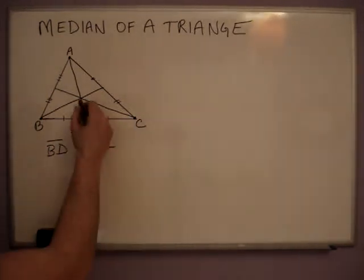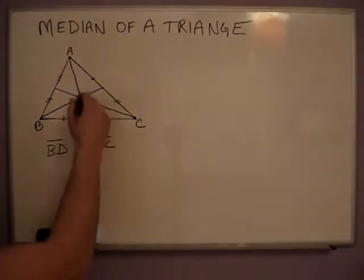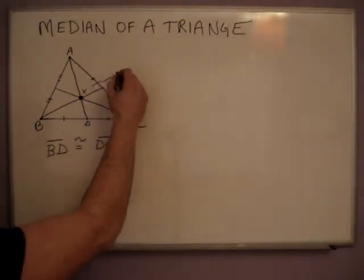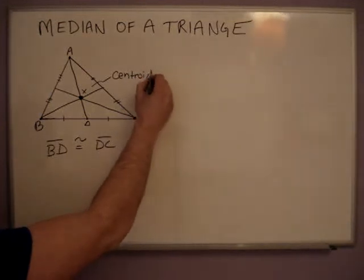You notice that all the three medians meet right in the center. And that center point, we'll label X, is actually the centroid. So it is known as the centroid of a triangle.